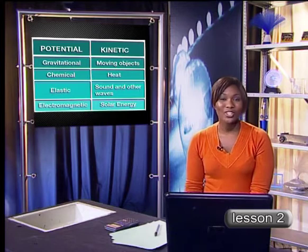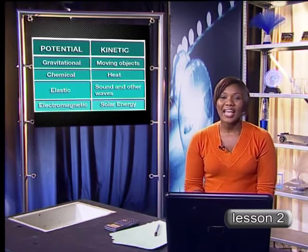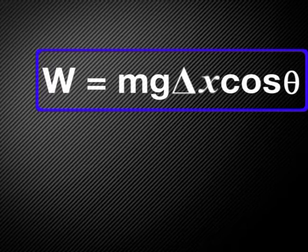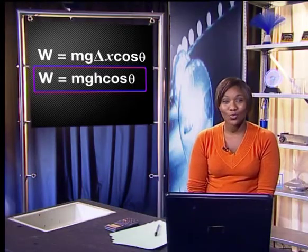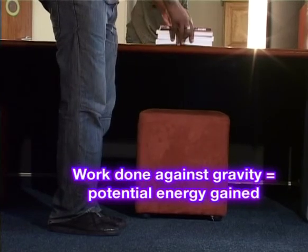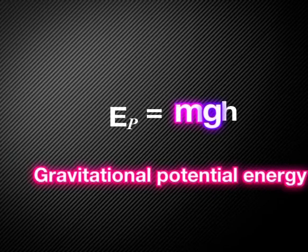Let's look at the equations we use to calculate energy. Because height forms part of this work equation, we can also say that the work done against gravity can be calculated by using the equation: work equals mass times gravitational acceleration times displacement times cos theta. In this equation, displacement is equal to the height lifted, and cos theta is equal to 1. Therefore the work done against gravity is equal to the potential energy gained.